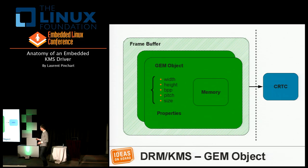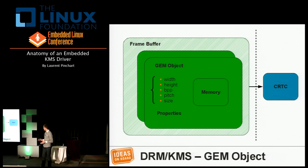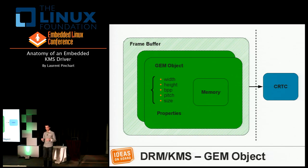A GEM object is really a piece of memory — a linear piece from a virtual memory point of view. It has a size, a number of bits per pixel, a pitch, and it's associated with a piece of physical memory. Several GEM objects are used to create a frame buffer.